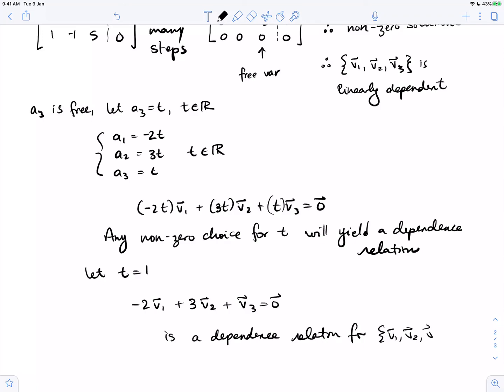For the set v1, v2, v3. So the answer to our problem, the collection of vectors is linearly dependent. And here is a dependence relationship for them.